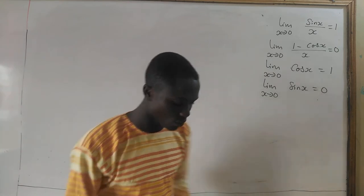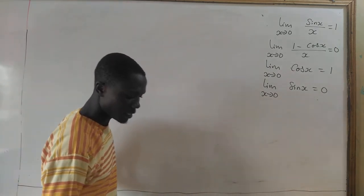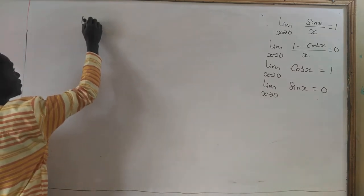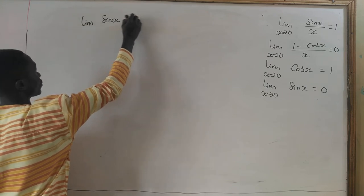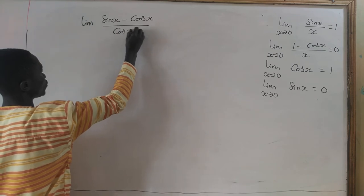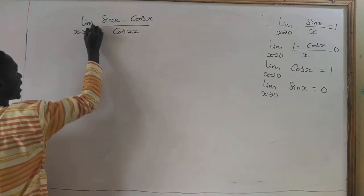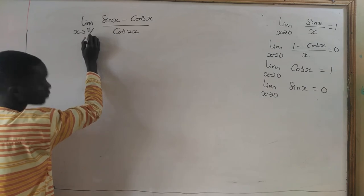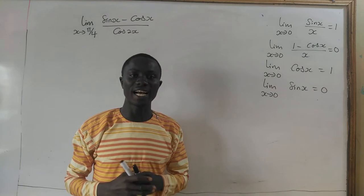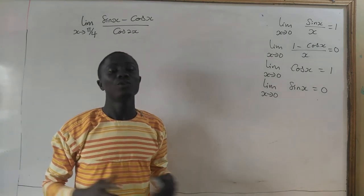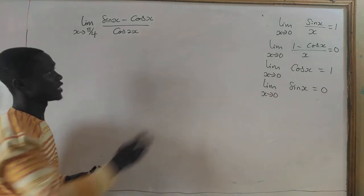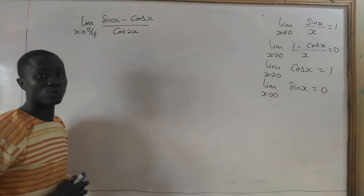Now, let's look at these questions. The first one is: what is the limit of sine of x minus cosine of x divided by cosine of 2x as x approaches pi on 4? We are doing the limits without using L'Hôpital's rule, so we have to be good with our trigonometric identities. We have these basic limits there for us.